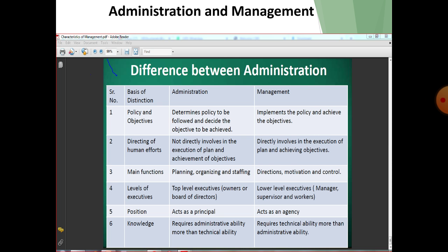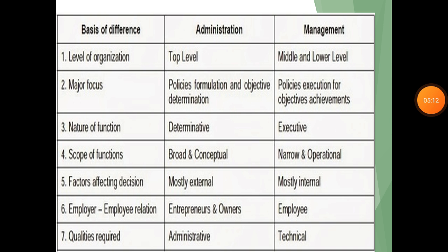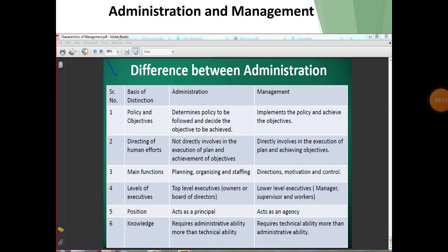The main function in administration includes planning, organizing, and staffing, while in management it is direction, motivation, and control. The level of executive — administration is a top-level executive and management is a low-level executive. In terms of position, administration acts as a principal and management acts as an agent. Knowledge required: administrative ability is more than technical ability in administration.